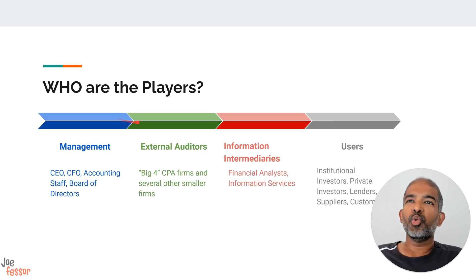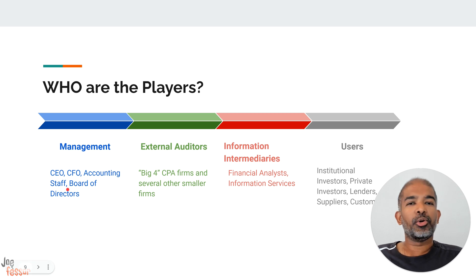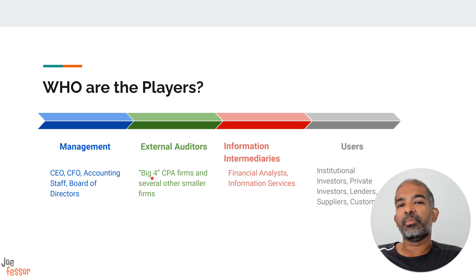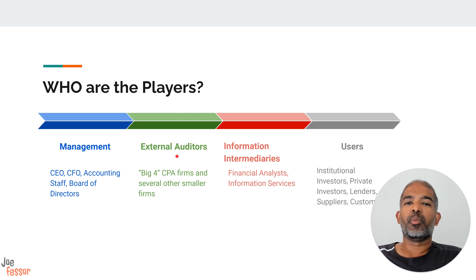Moving on, let's look at who are the main players in financial accounting. First, we'll focus on the management — the CEO, the CFO, the various accounting staff, and the board of directors. All these entities play a role in preparing financial statements and certifying them. These financial statements are then passed on to the external auditors, which can be any of the big four CPA firms or several other small independent firms. These auditors are responsible for checking the financial statements and providing their opinion that everything is accurate and reliable.